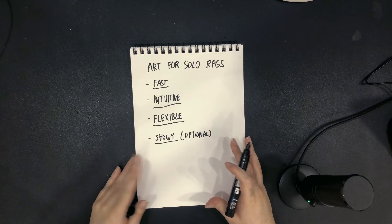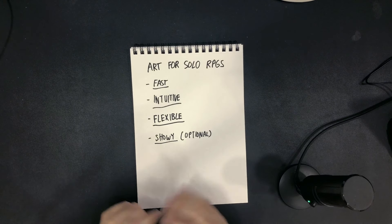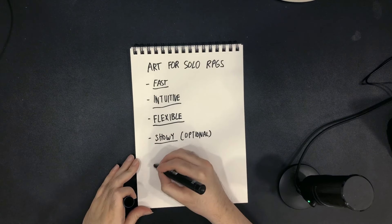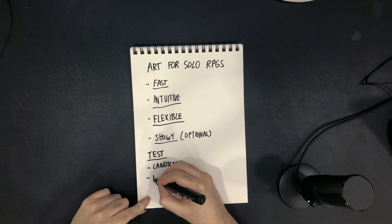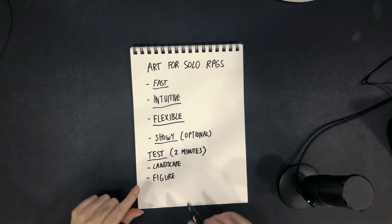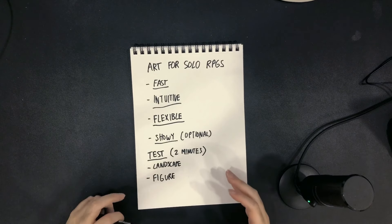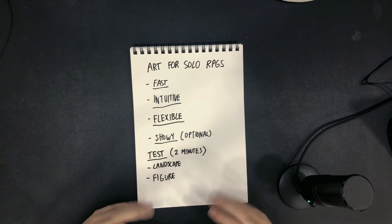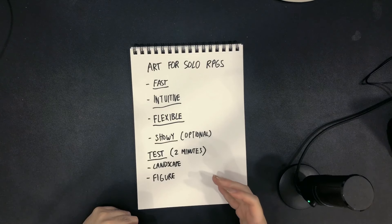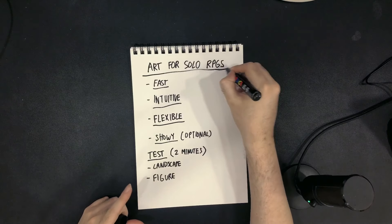Optionally, it'll be nice if it were showy, because that might garner a bit more interest in the videos — something people can look at that's actually kind of interesting to see. I've come up with a few methods I thought might be useful and I might find more in the future. The plan is, for each of these methods, I'm going to draw a landscape and also a figure. Each test will be two minutes long per landscape or figure. We'll see which method comes out on top.